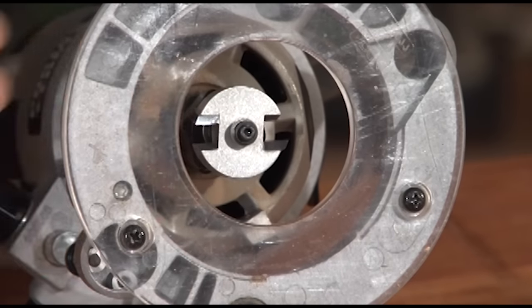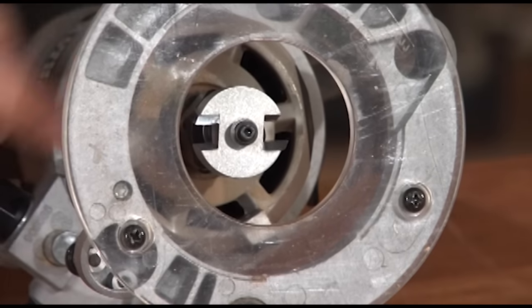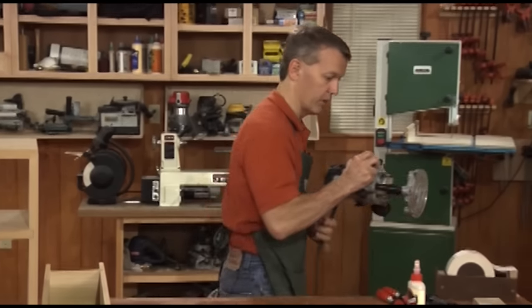You can change out bearings by bits with different size bearings so you can cut rabbets of different widths. Let me show you how this works, it's really pretty simple.